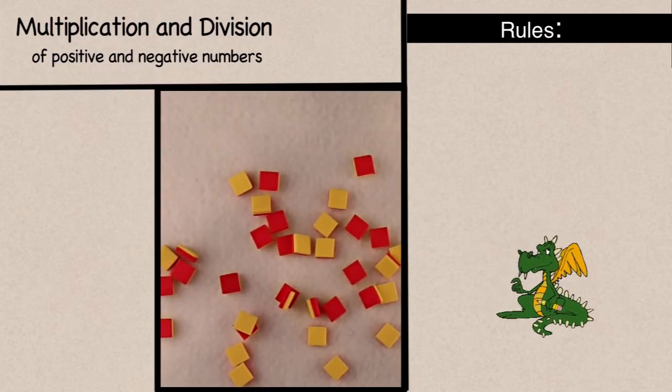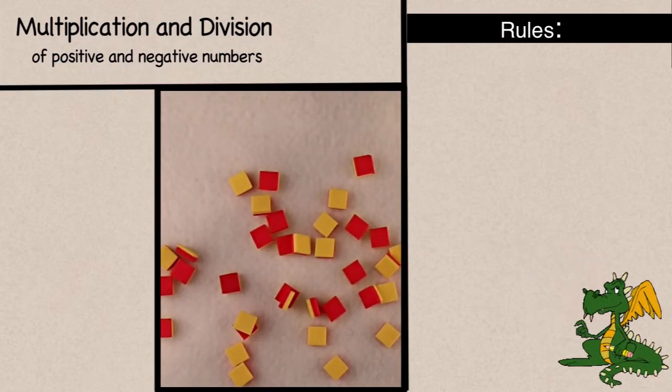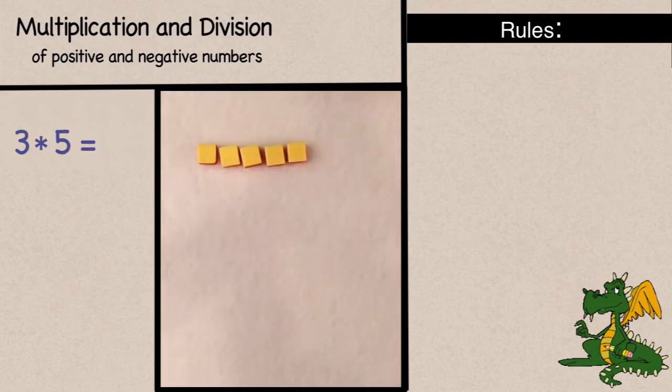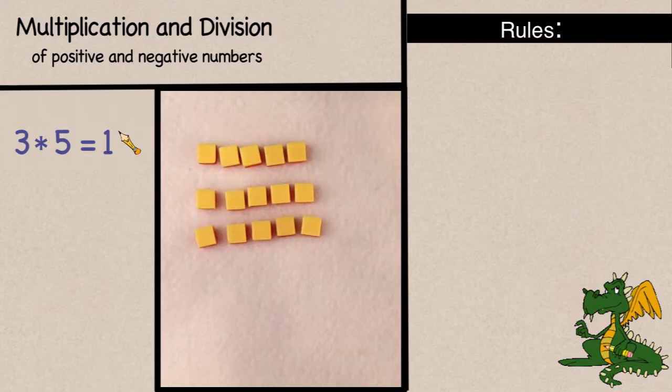Let's start by using our algebra tiles to model multiplication. Remember, 3 times 5 means that I have 3 sets of 5 positive items, or 15.